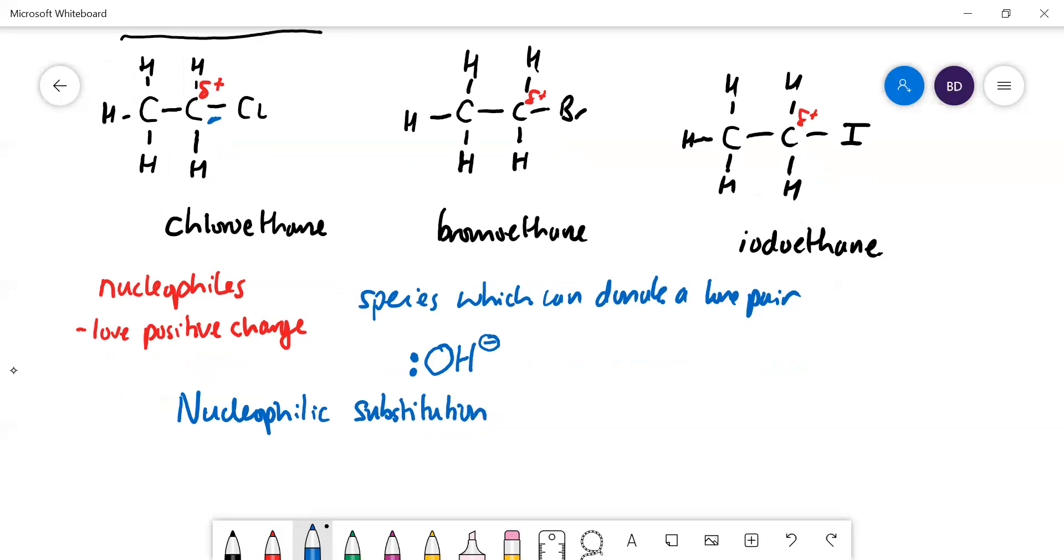If I write down an equation for that reaction, let's do bromoethane, so we're going to have CH3-CH2-Br.